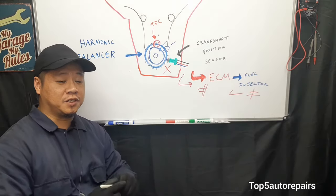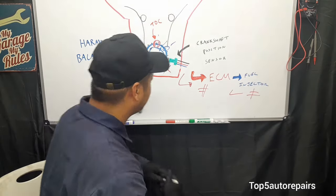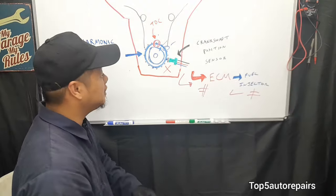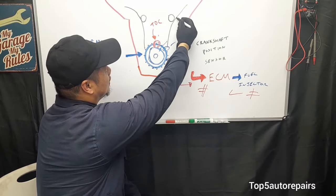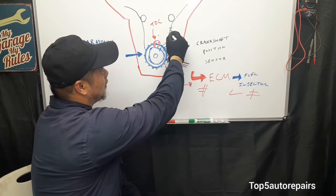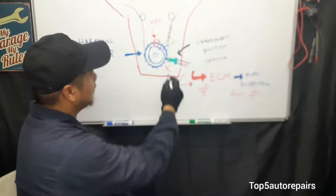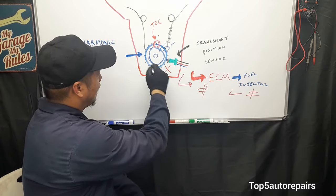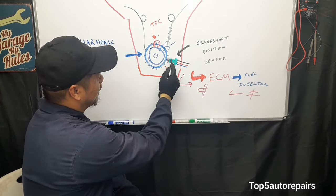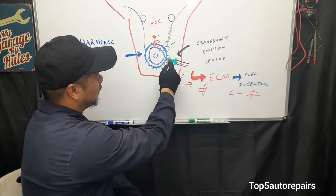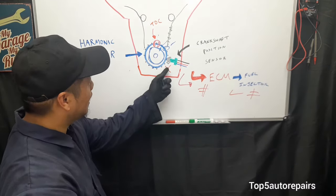Another possibility is that your crankshaft position sensor can become damaged. Let's say you have a timing belt system and the timing belt becomes worn. What happens is this rubber timing belt becomes worn and can start to slap all over the crankshaft position sensor.